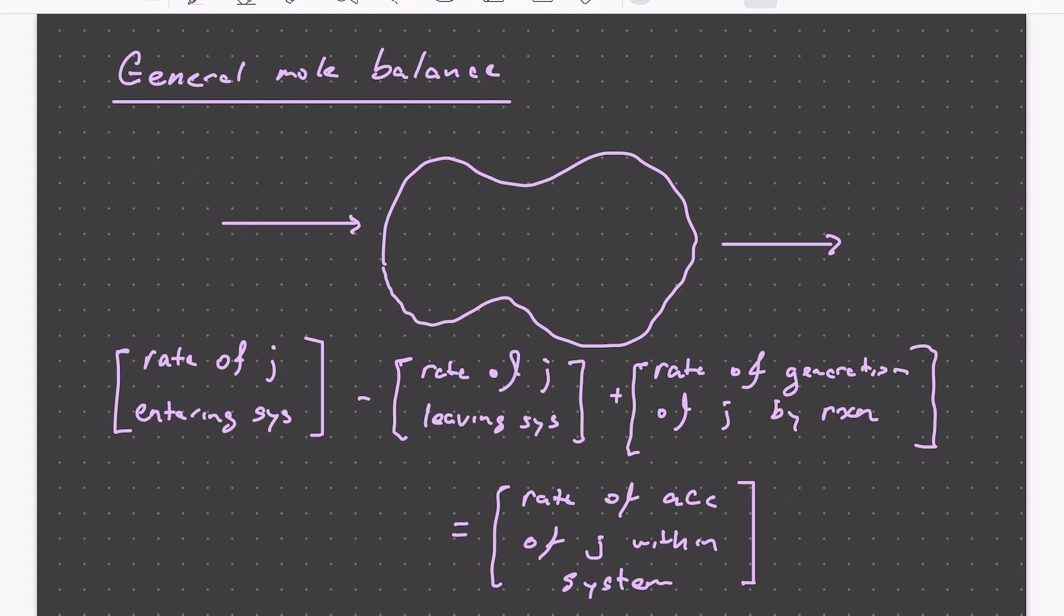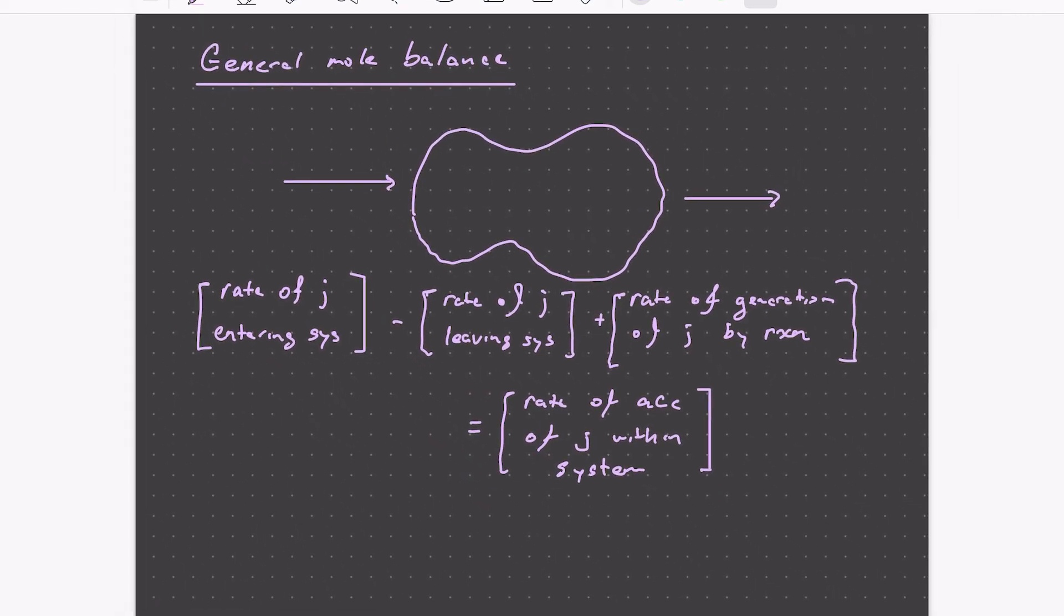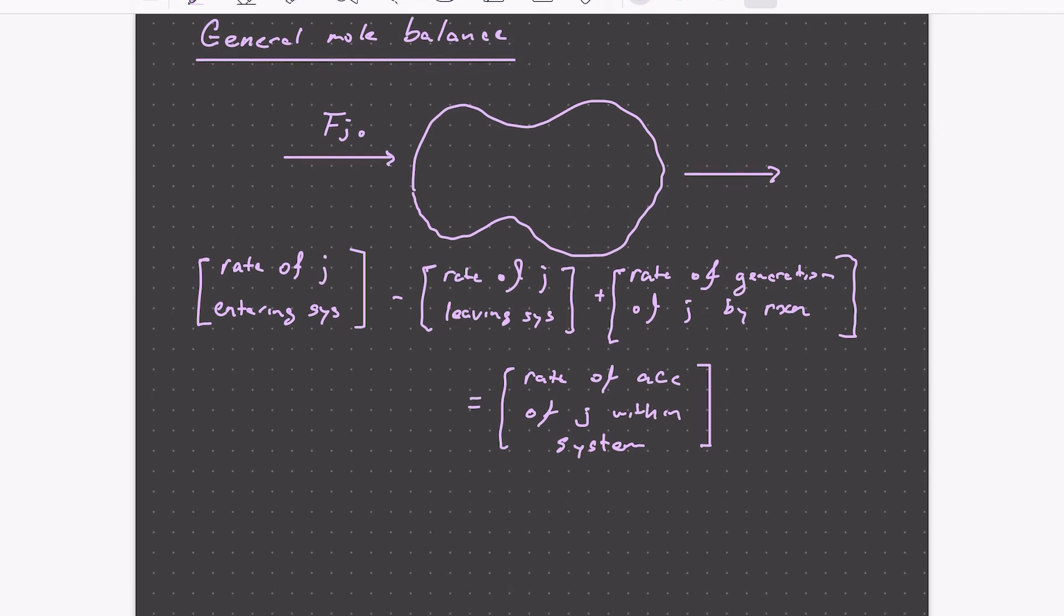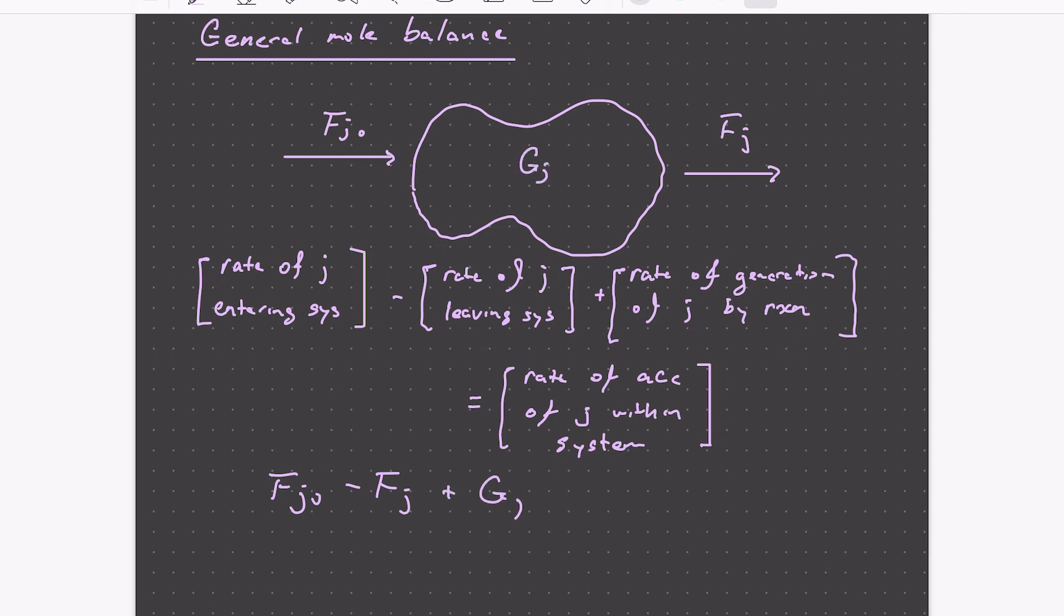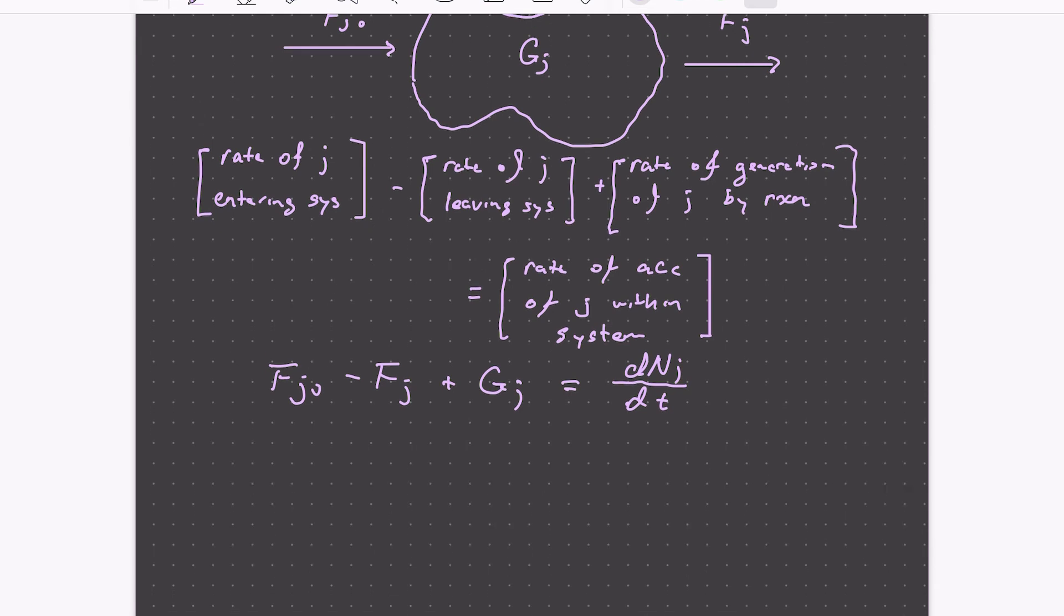So this is just a general material balance on J. We can write this in notation rather than in words. So we'll call the flow in F J naught, the molar flow rate, moles per time of J coming into the system. We'll call the flow out F of J. And we'll call the generation rate of J G of J. And this summation is going to be equal to the accumulation of J in the system, which is just the time derivative of the number of moles of J in the system.